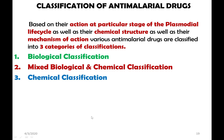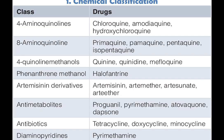The classification of antimalarial drugs is based on action at particular stages of the plasmodial life cycle, chemical structure, and mechanism of action — three categories. The first is biological or life-cycle-based classification. The second is mixed biological and chemical classification, taking mechanism of action into consideration. The third is purely chemical, based on drug structure. The chemical classification includes: 4-aminoquinolines, 8-aminoquinolines, quinoline methanols, phenanthrene methanols, artemisinin derivatives, anti-metabolites, antibiotics, and diaminopyrimidines or DHFR inhibitors.